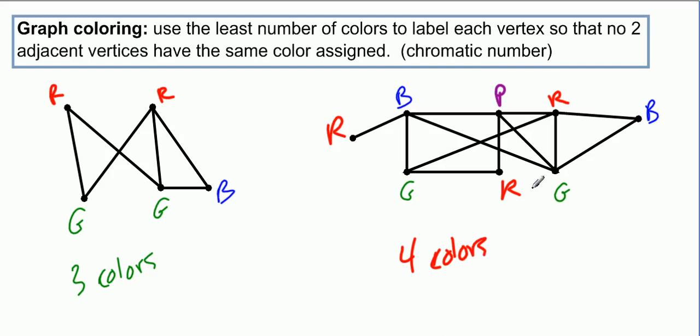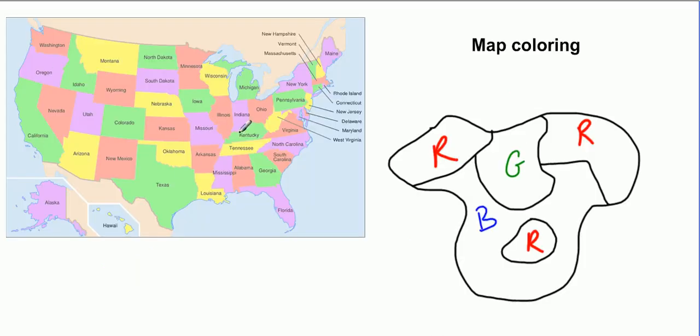There is a theorem that says that if a graph is planar, then you should be able to do no worse than four colors.